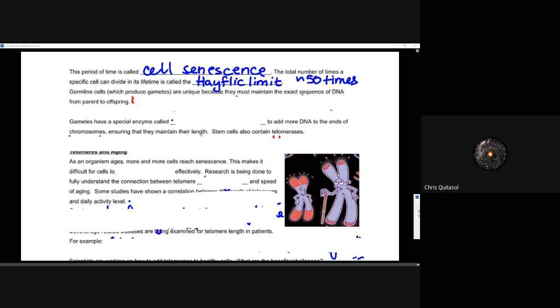But those germline cells, which produce gametes, are unique because they must maintain the exact sequence of DNA from parent to offspring. So when we're talking about those oocytes and those spermocytes, the sperm and egg of male and female, they kind of don't really abide by the same rules that the rest of cells have to listen to because they need to keep that genetic fidelity over millions upon millions upon millions of creation of spermocytes in males. And oocytes are a little bit different because the female is born with all eggs that you will have. So it's a little bit different. But those gametes have a special enzyme called telomerase, and it adds DNA to the ends of chromosomes, ensuring that they maintain their length.